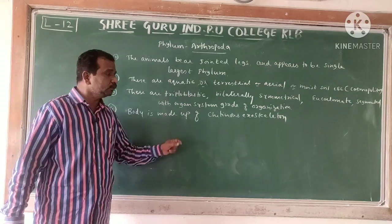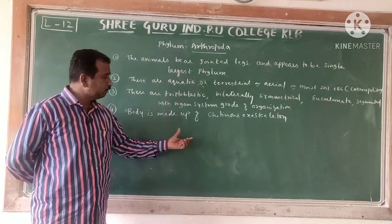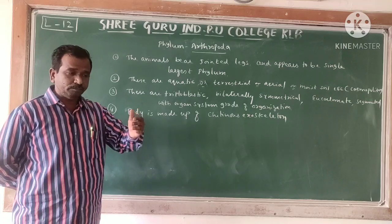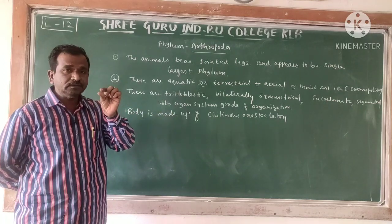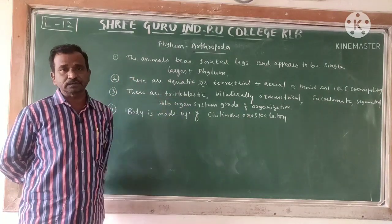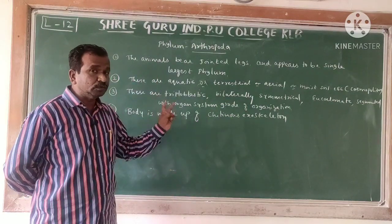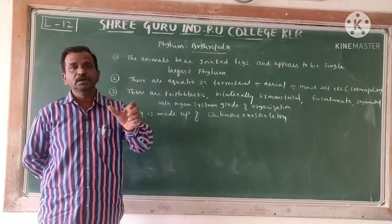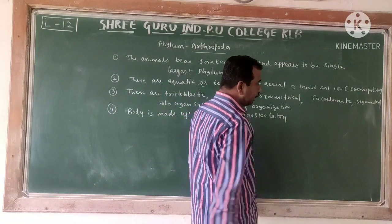The body is made up of chitinous exoskeleton. Chitin is a hard substance. The skeleton is made up of chitin. So the body is made up of chitinous exoskeleton — exo meaning outside — and the skeleton is normally made up of chitin.